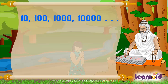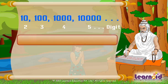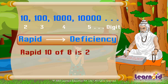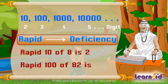10000 are bases of 2, 3, 4, 5 digits and so on. The rapid of a number means finding the deficiency to the nearest base. Rapid 10 of 8 means the deficiency in 8 to make 10, i.e., 2. Similarly, rapid 100 of 82 means the deficiency in 82 to make 100, i.e., 18.